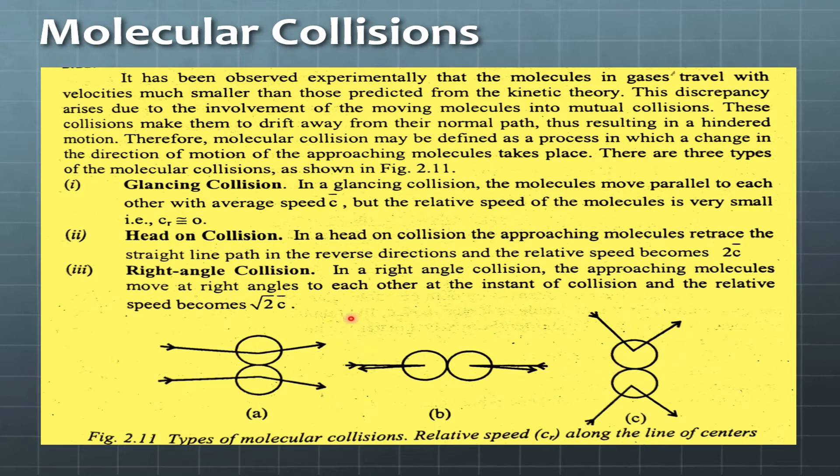When approaching molecules strike each other and then move to the opposite side at right angles, these are called right angle collisions. The relative speed is root 2 times c bar. So in this slide we have discussed three types of collisions: glancing collision, head-on collision, and right angled collision.